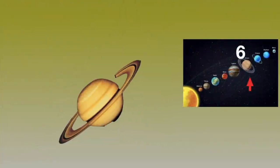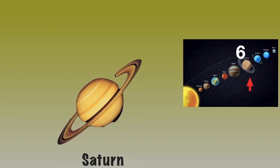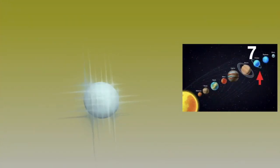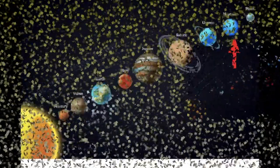The sixth planet in the Sun's orbit is Saturn, the ring planet. The seventh planet is Uranus and the last planet is Neptune.